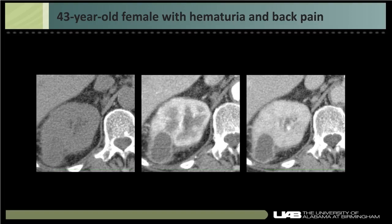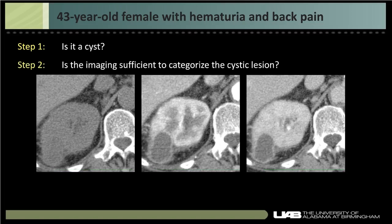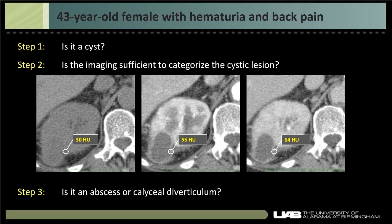The third Bosniak basic step is asking: is this an abscess or calyceal diverticulum? A 43-year-old female with hematuria and back pain presenting to the ER — despite an enhancing cystic-appearing lesion — turned out to have pyelonephritis and a renal abscess, not a cystic renal mass. Perirenal haziness may hint at it, but the key is to review the clinical history. If you can't tell definitively, entertain both possibilities, but don't Bosniak classify an abscess.